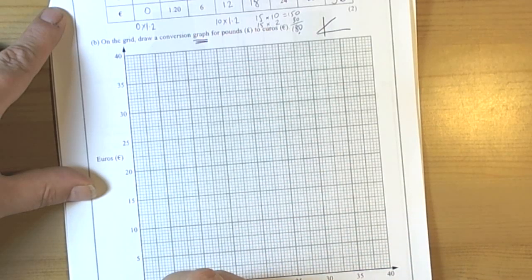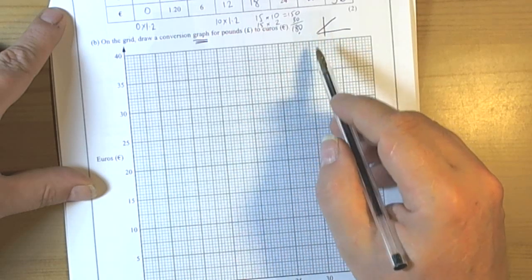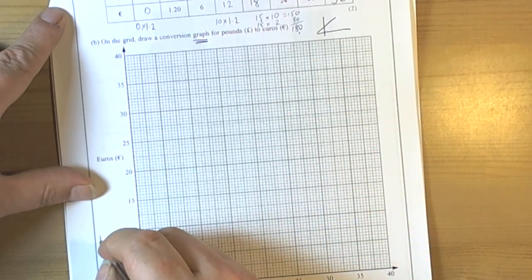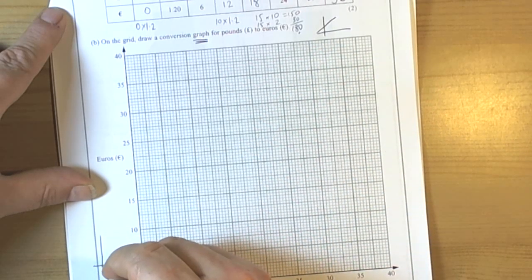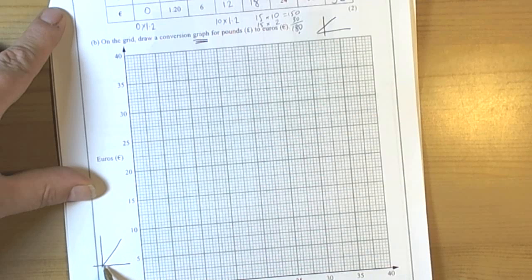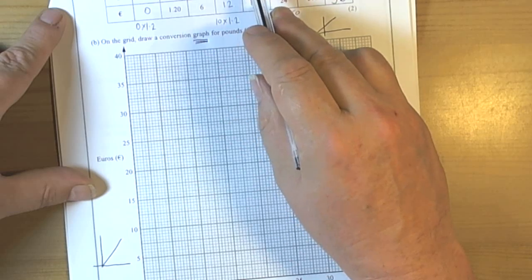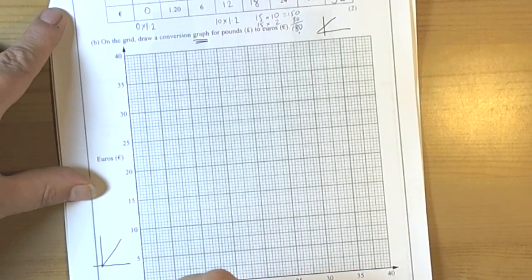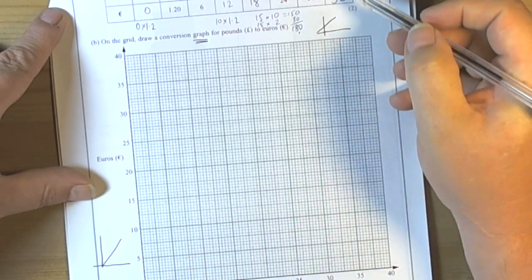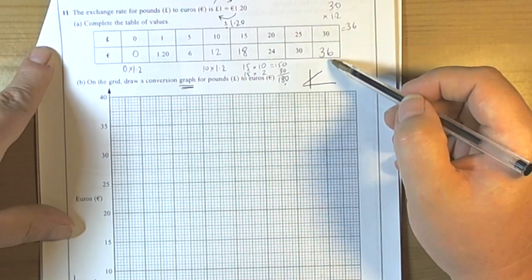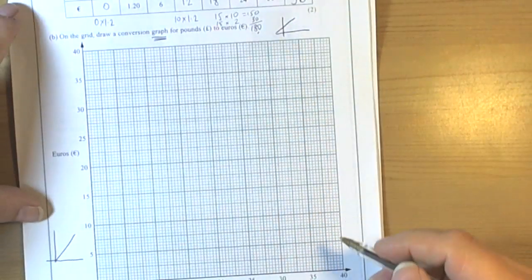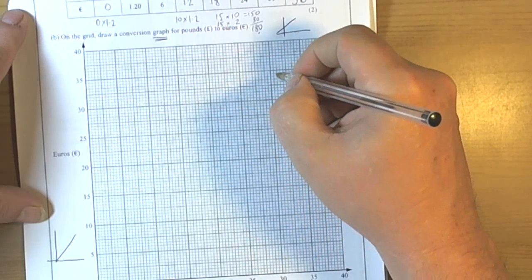So let's have a look. They're telling us 0,0 because it's a conversion graph. There is a quick way of thinking about this. Conversion graphs start from 0,0 and work your way up to the top value. It's a linear relationship, it's a simple multiply all the time by the same number. So it's 0,0, and then look at our biggest number in the table. It was 30 and 36. So if we go to 30 and up to 36.